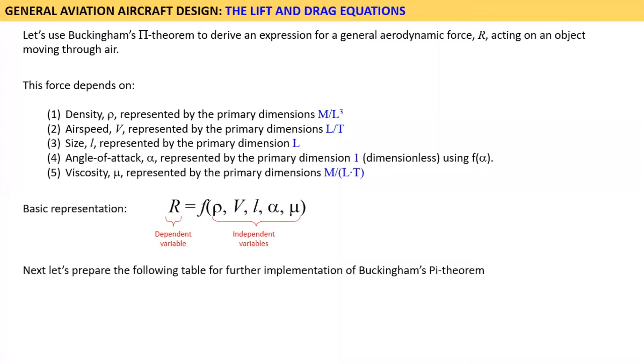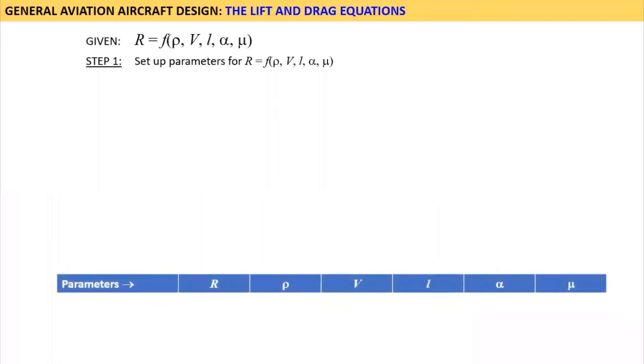Next, let's prepare the following table for further implementation of Buckingham's pi theorem. For clarity, let's rewrite the function for R. Step 1. Let's set up parameters for R. This includes R as well as rho, V, L, alpha, and mu. Note that the total number of parameters, N, equals 5. Ordinarily, it would be 6 here, but it is 5 since alpha is dimensionless.